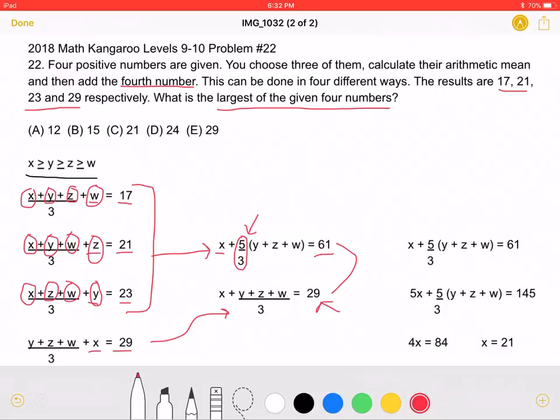Let's multiply the entire bottom equation by 5, so that they could both have the same coefficient in front of the X plus Z plus W quantity as so. Multiplying by 5, we will get that 5X plus 5 thirds the quantity of Y plus Z plus W equals 145.